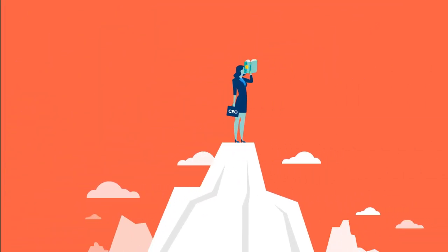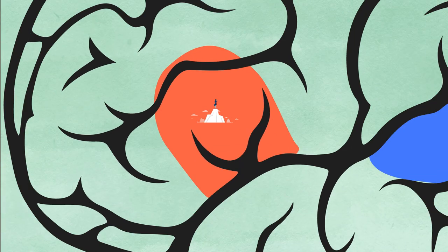You then connect these different areas to the CEO of the reading network, or the inferior frontal gyrus.